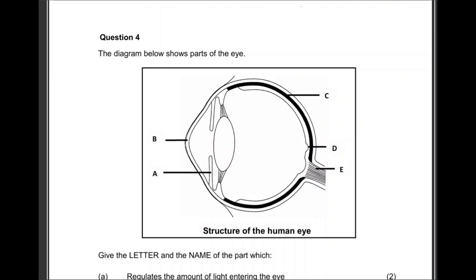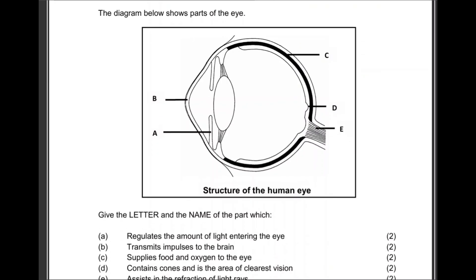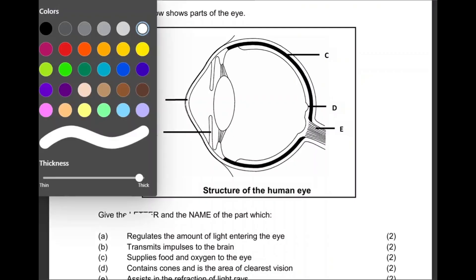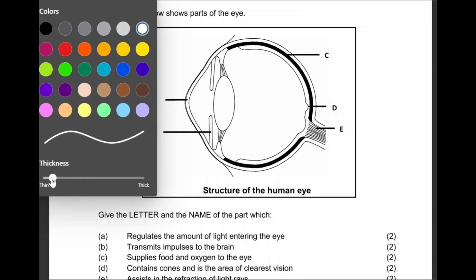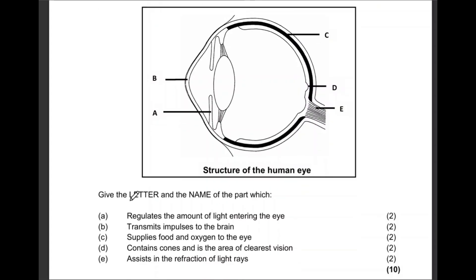Let's answer these two questions from previous question papers. Both questions are based on the eye. The diagram below shows part of the eye. Give the letter and name of the part which regulates the amount of light entering the eye. That will be the iris — the letter is A and the name is iris.